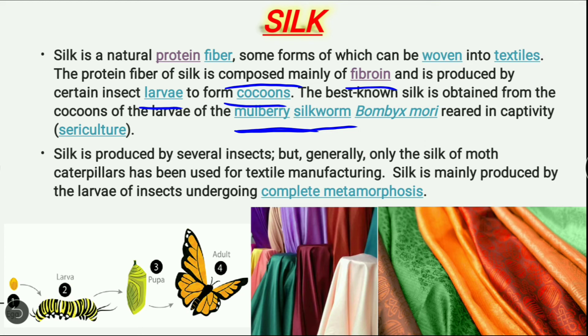Silk is produced by several insects, but generally only the silk of moth caterpillars has been used for textile manufacturing. Silk is mainly produced by the larvae of insects undergoing complete metamorphosis.